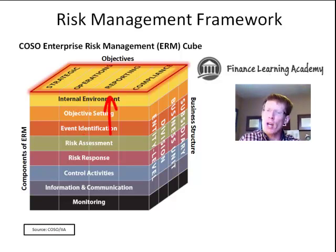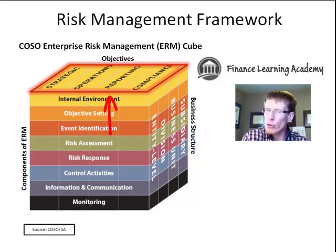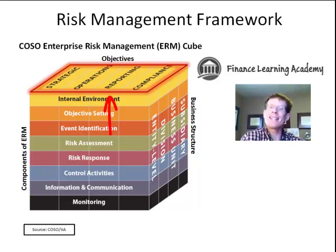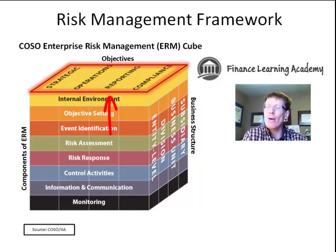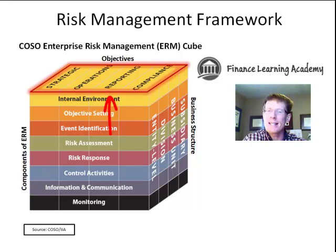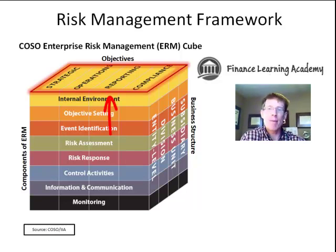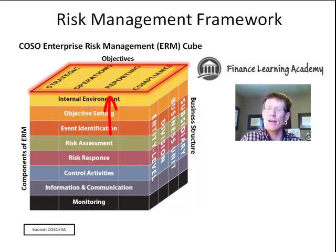Reporting objectives address reliable internal and external reporting. Internal reporting is important to ensure that key indicators are measured and monitored to enable management to take action whenever necessary. External reporting is important to ensure that the organization meets the needs of its stakeholders, including the continued flow of capital necessary to meet strategic objectives.